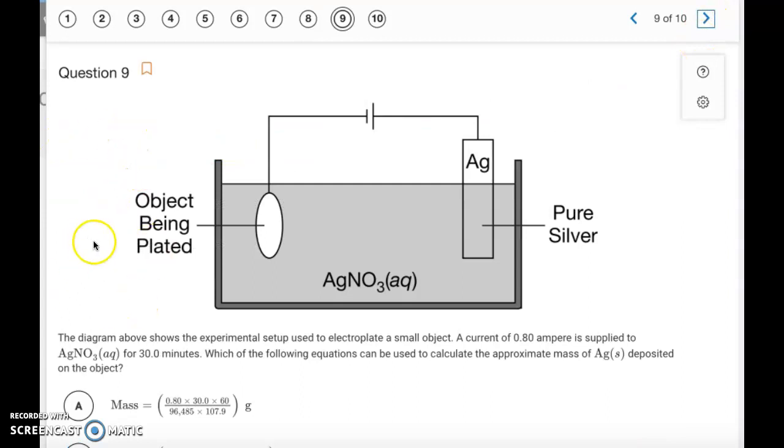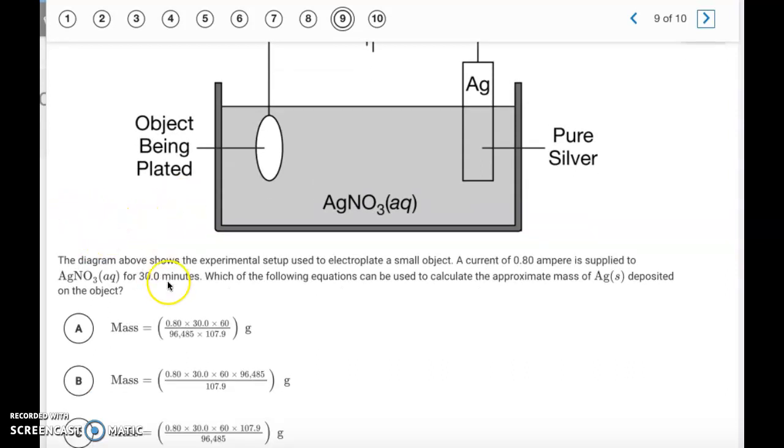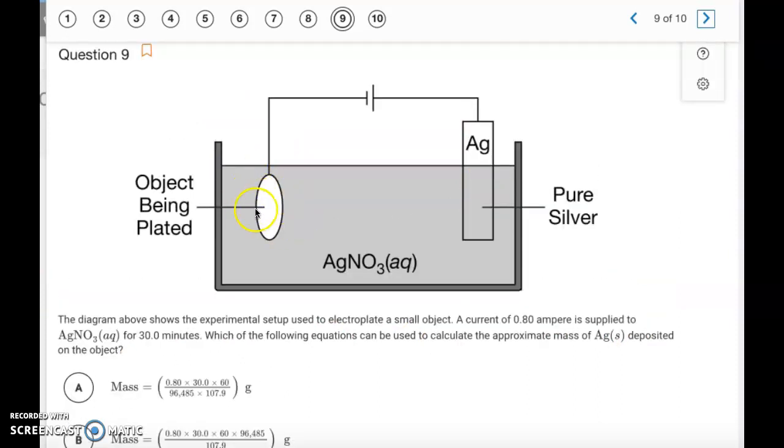Okay, question 9. This is a question from section 9.10. So it's a type of stoichiometry calculation. We have a current of 0.80 ampere that's applied to the silver nitrate solution for 30 minutes. We want to figure out which of the equations can be used to calculate the approximate mass of silver deposited on the object. So this little, looks like a, whatever that is, that's where the silver is being deposited. It's coming from the silver that's in solution.